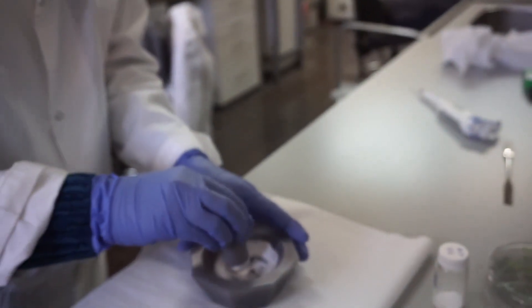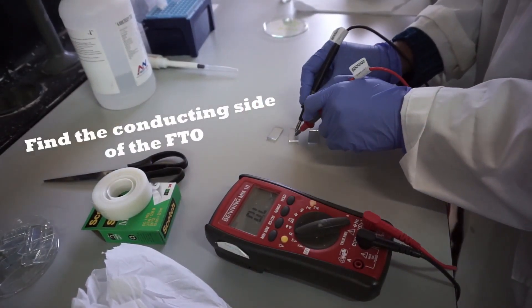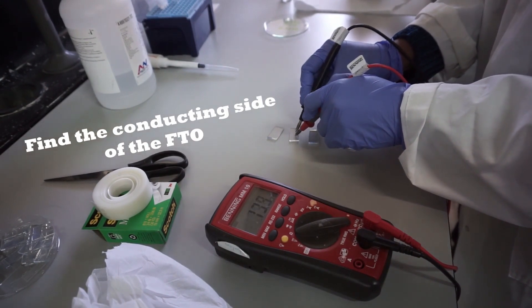Use a voltmeter to find the conducting side of the FTO. We want the conducting side to face up.